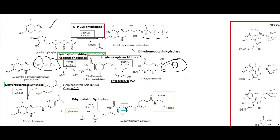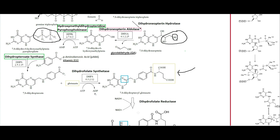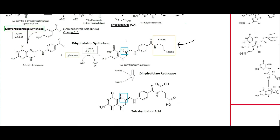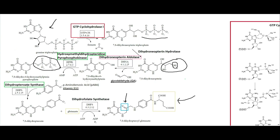That adds PABA onto the structure while removing the pyrophosphate, giving us 7,8-dihydropteroate. Then we add a glutamate onto that with dihydrofolate synthetase — that glutamate is shown in the gold box — and then dihydrofolate reductase uses NADH to reduce this, removing a double bond shown circled in blue, making it into a single bond.